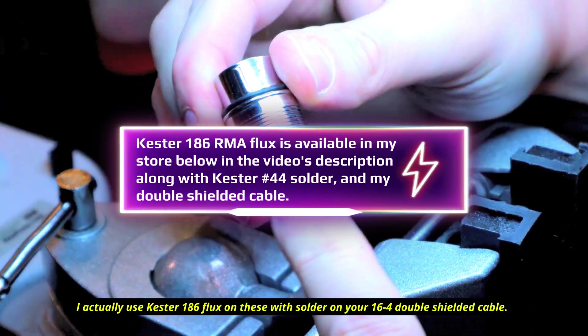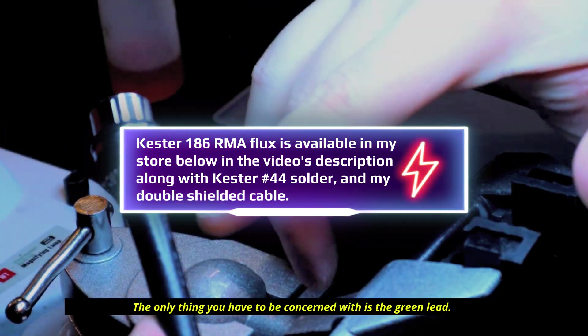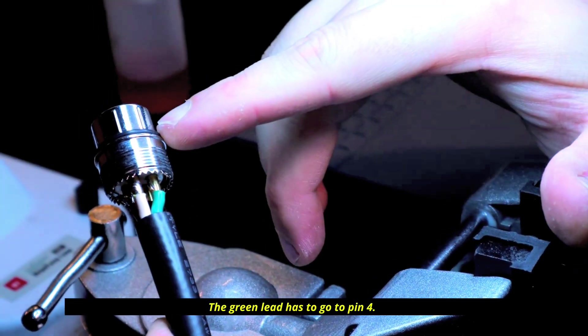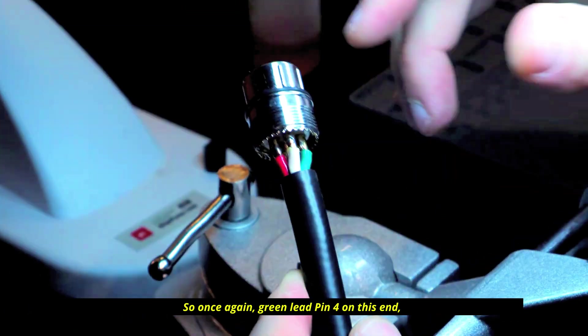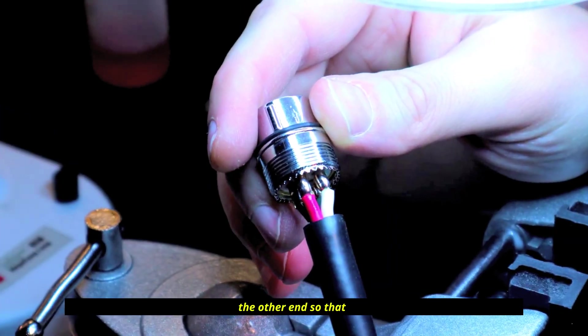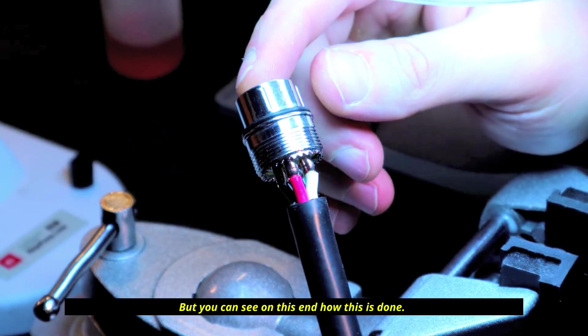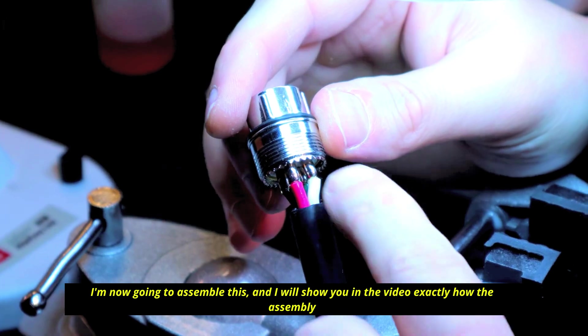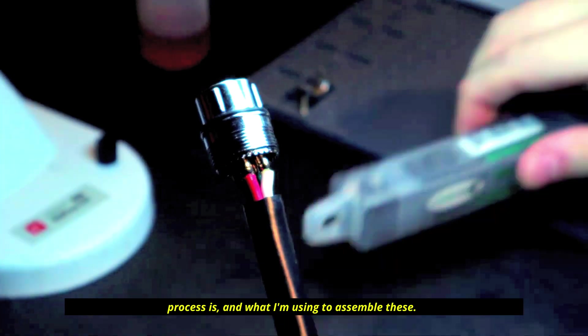You can see here that I use solder and flux. I actually use Kester 186 flux on these. With solder on your 16-4 double shielding cables, the only thing you have to be concerned with is the green lead. The green lead has to go to pin four. Once again, green lead, pin four on this end. I'm going to do another video showing you the other end so that it will interface with the VFD.